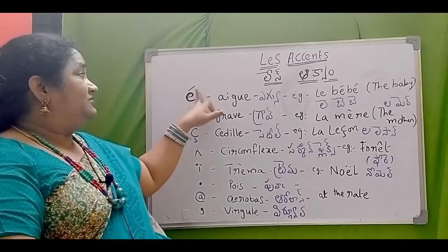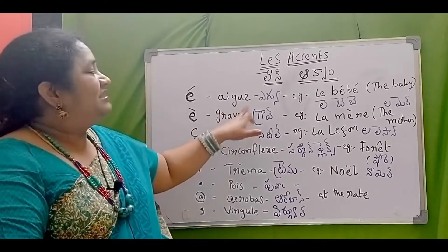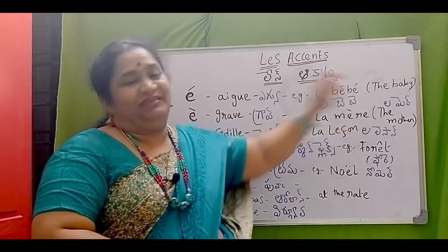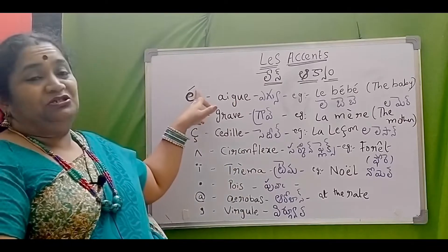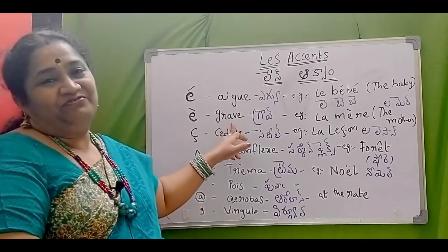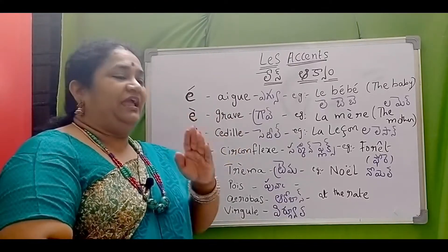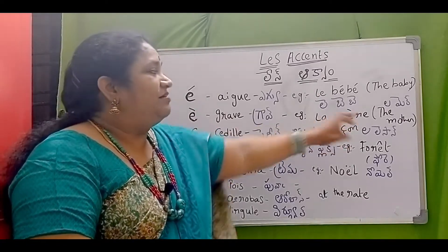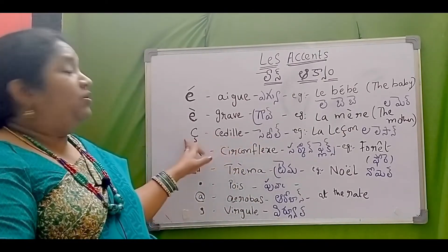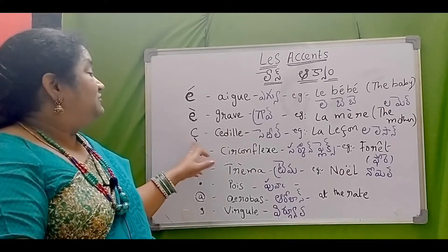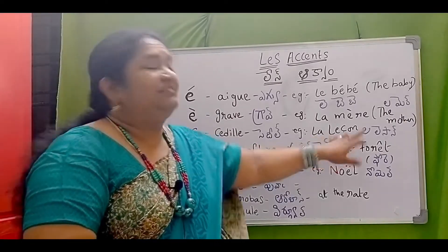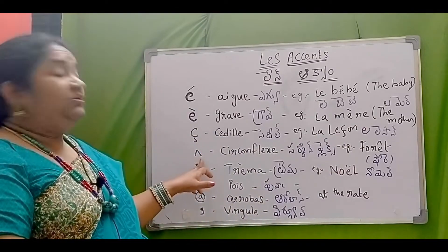E with accent this way is accent aigu. Example: le bébé — the baby. Then accent grave gives a smaller sound. Example: la mère — the mother. Then cédille — ç — gives a soft 'sa' sound in French, like in la leçon — the lesson.